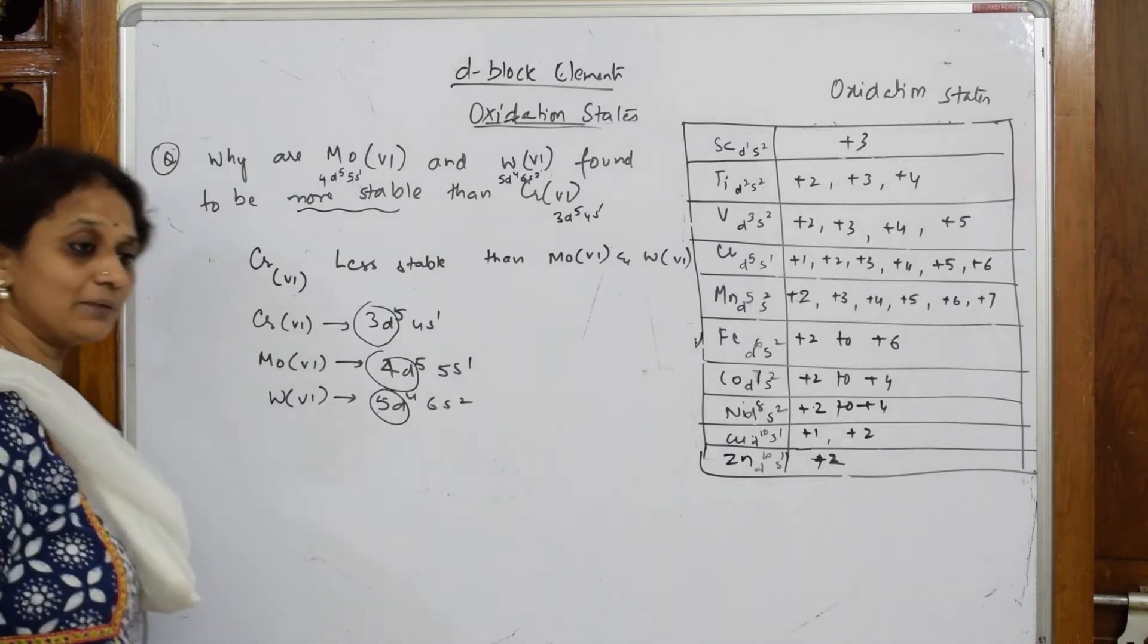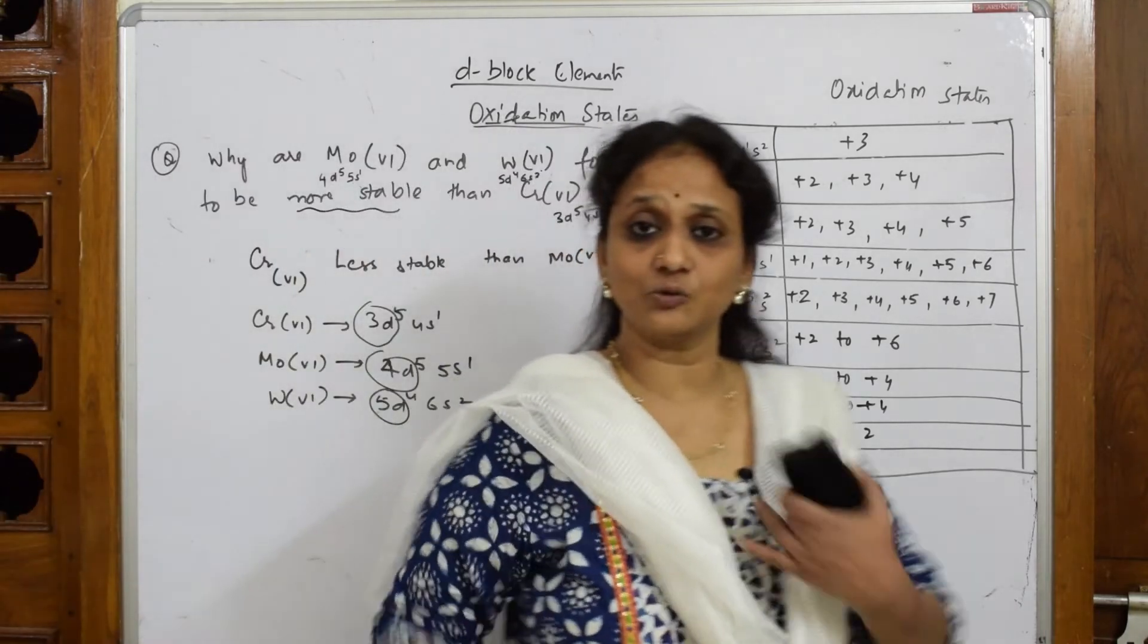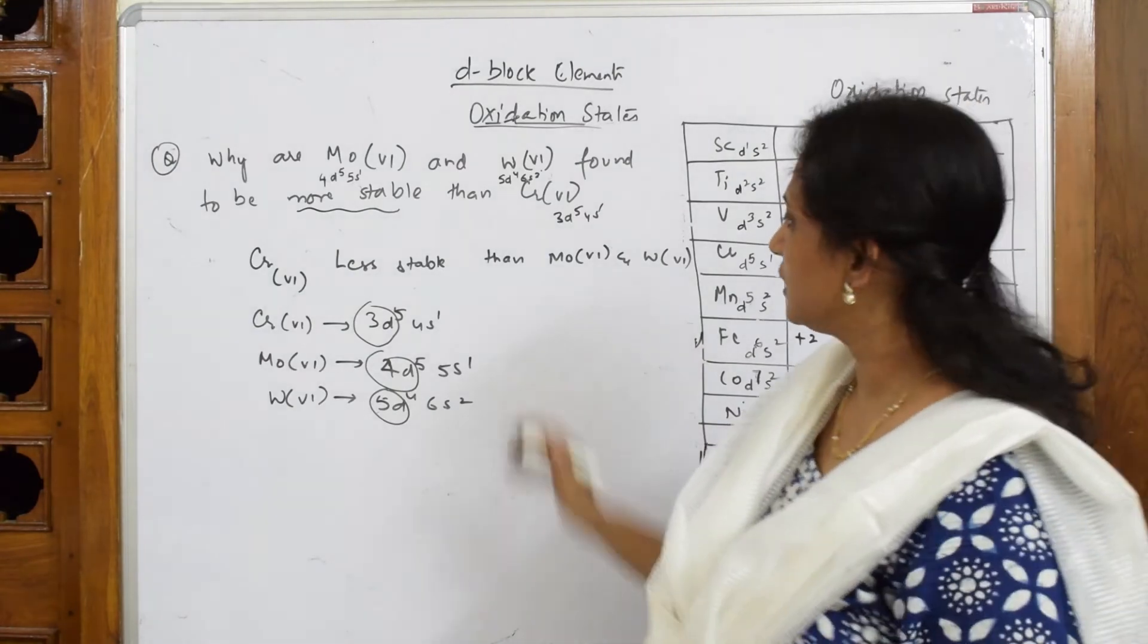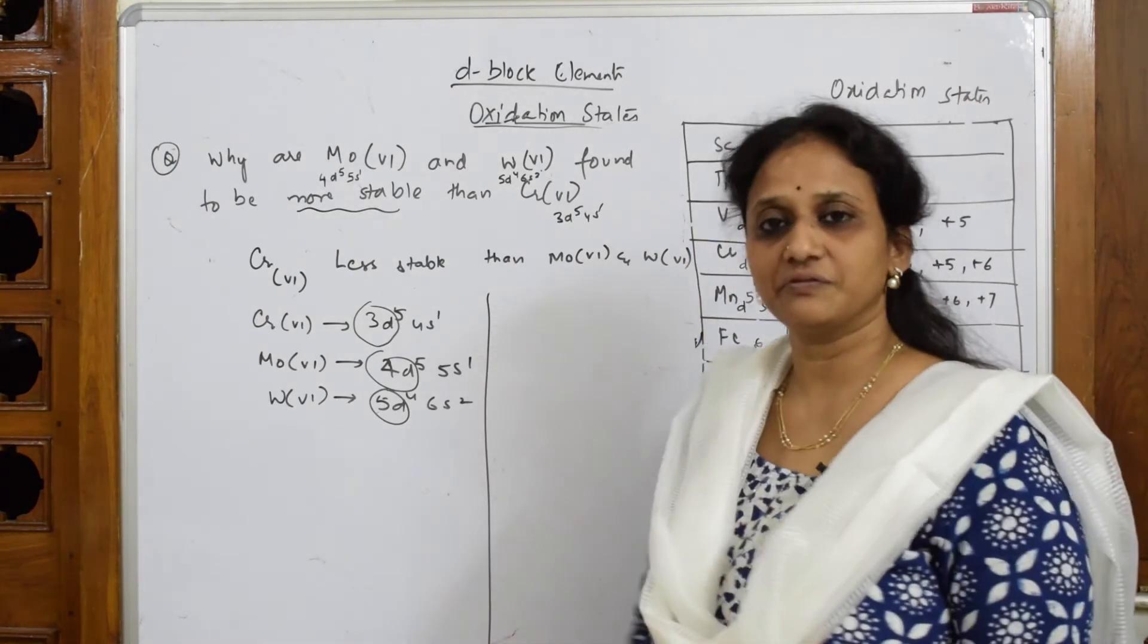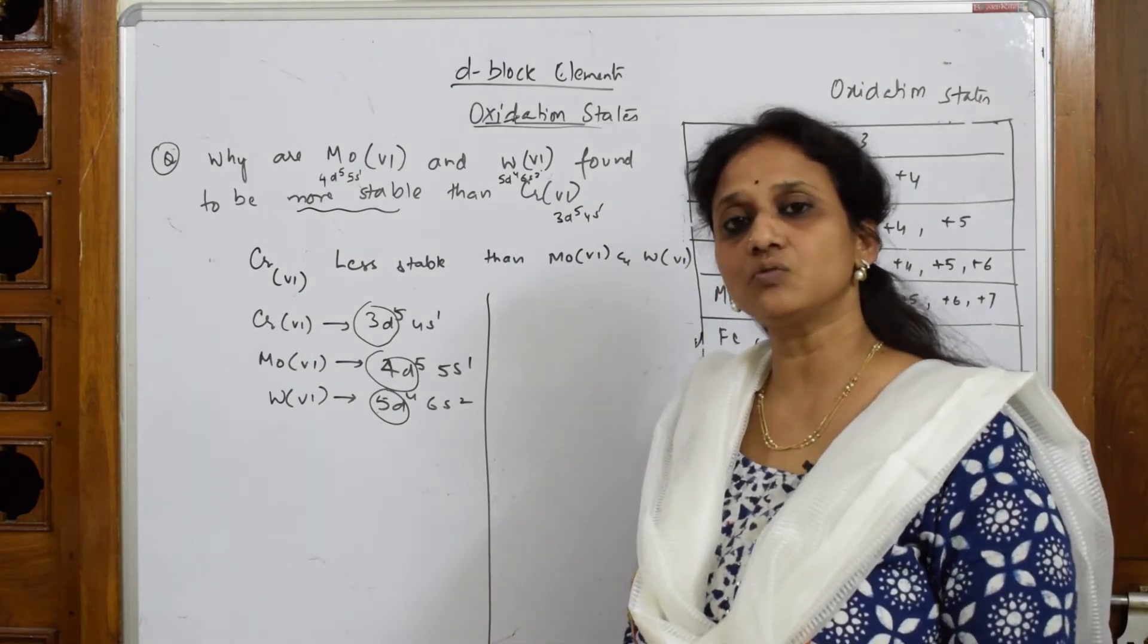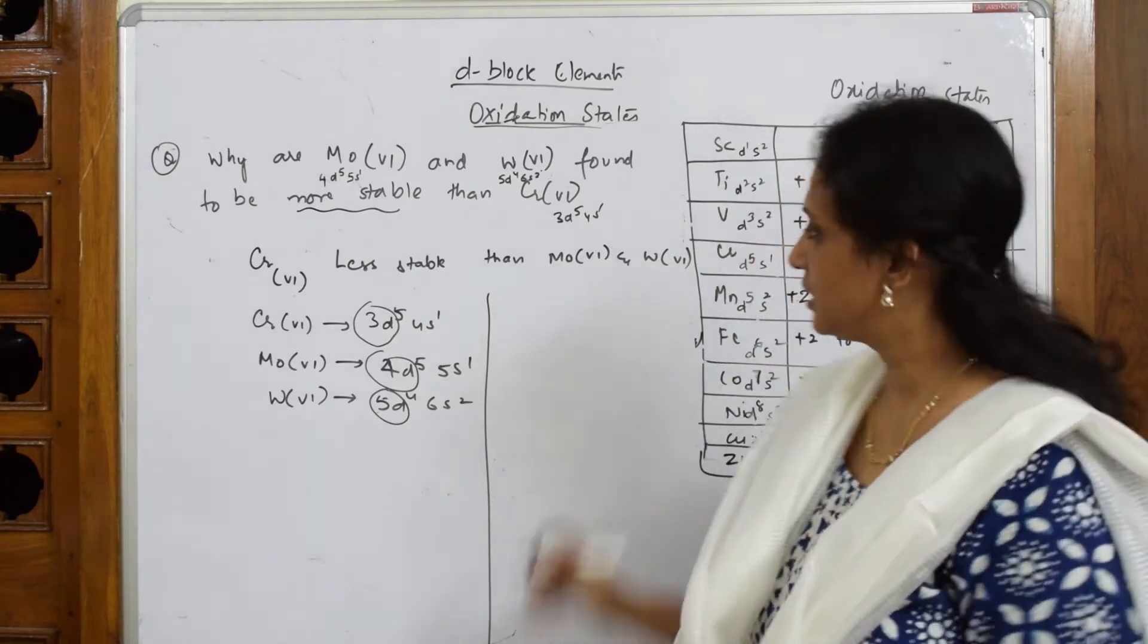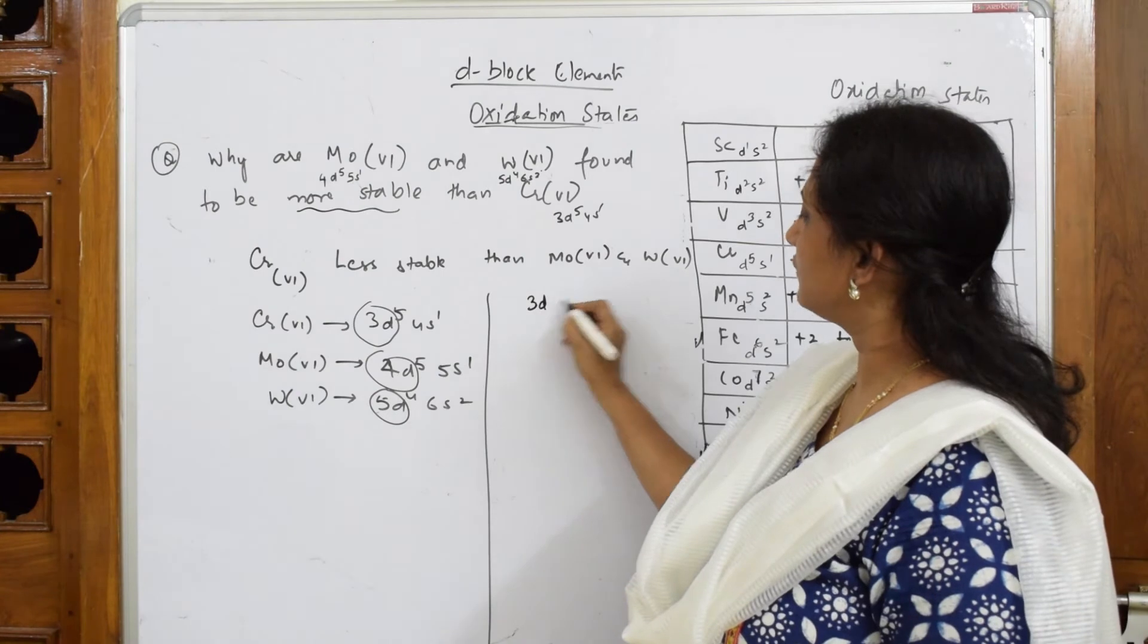about radial nodes, two important things you have to concentrate on: first, how to calculate radial nodes, and what is the use of having versus not having radial nodes. Now in case of 3d, if I have to calculate radial nodes, what is the formula I apply? I'm going to apply a formula called n minus 3. This